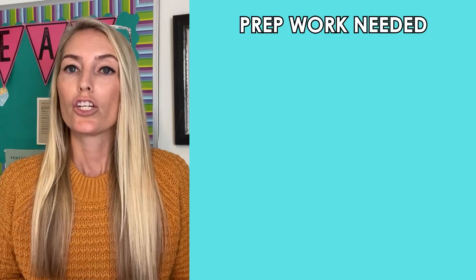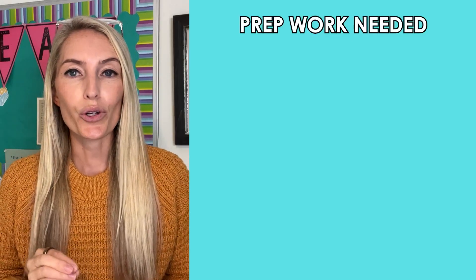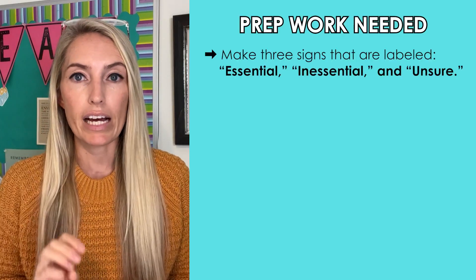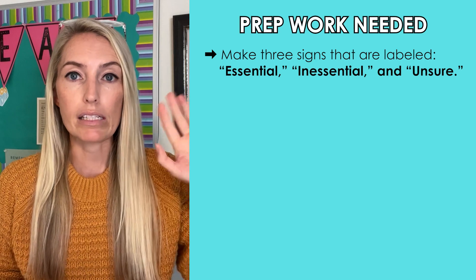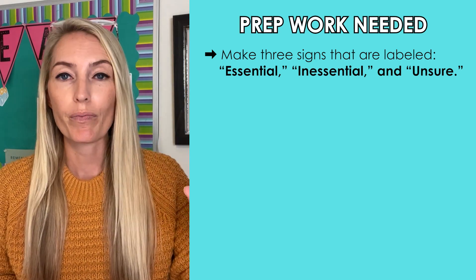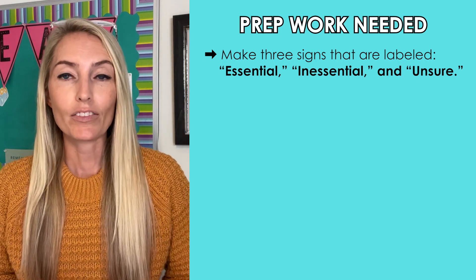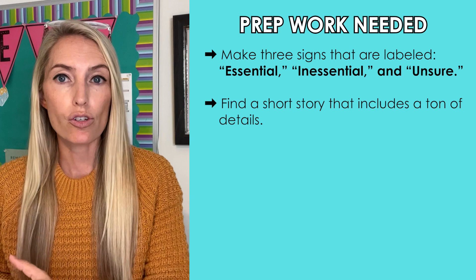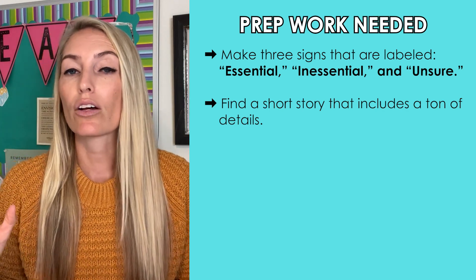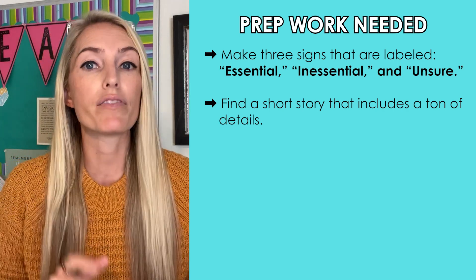To prepare for this lesson, there's a little bit of prep involved on your part, but it's not that bad. Before you introduce the activity to your class, you'll need to make three different signs labeled 'essential,' 'inessential,' and 'unsure.' Then you're going to find a short story that you can print out for your students, making sure that it includes a ton of details.